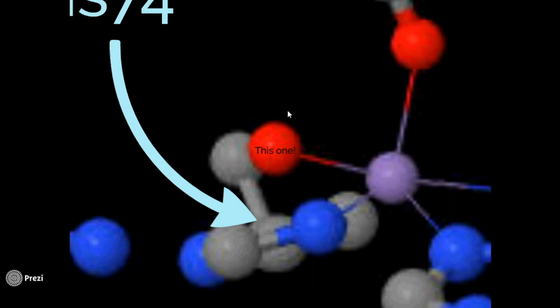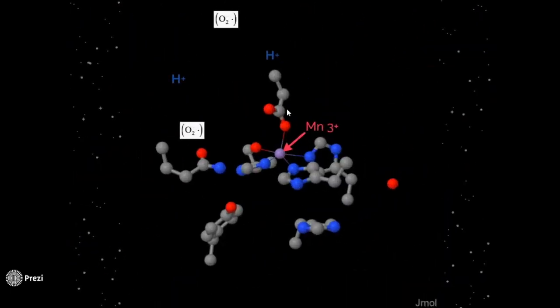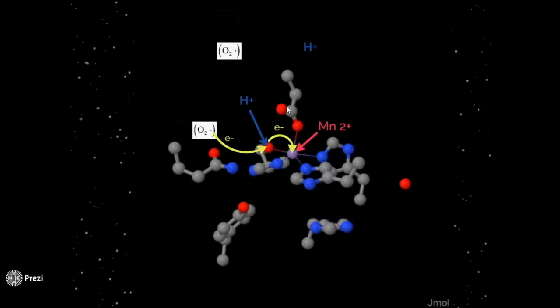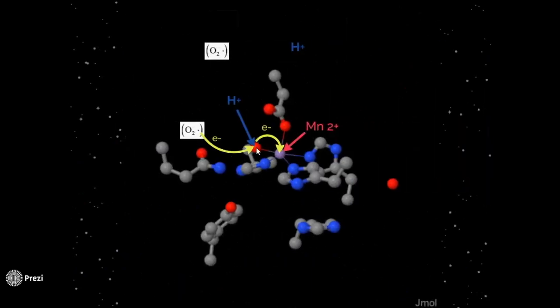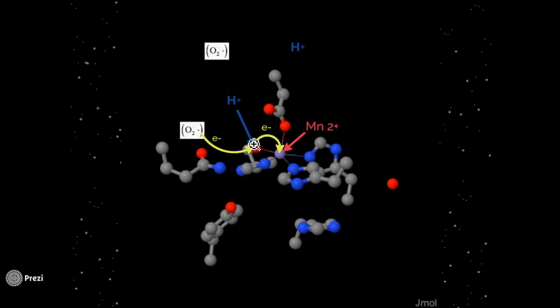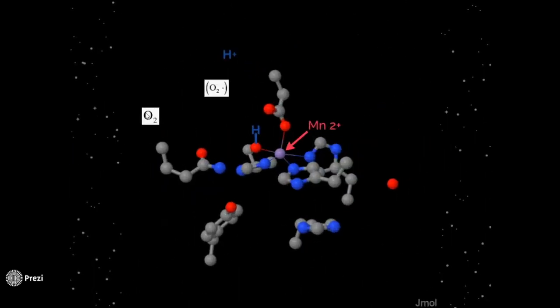When a superoxide radical enters the active site, it gives an electron to the hydroxyl, which in turn reduces the manganese center from 3 plus to 2 plus. While accepting the electron, the hydroxyl group also binds to a nearby proton, creating a water ligand. And the superoxide just becomes your stereotypical diatomic oxygen.